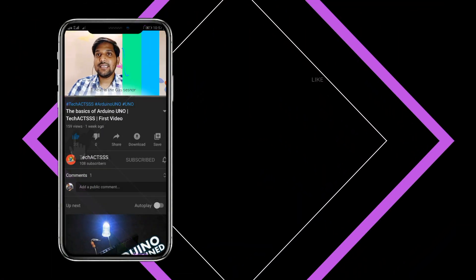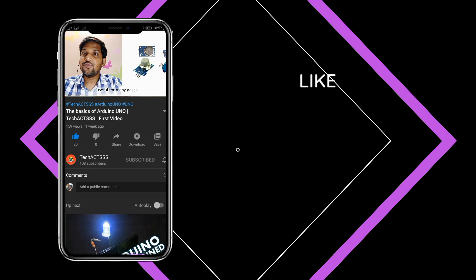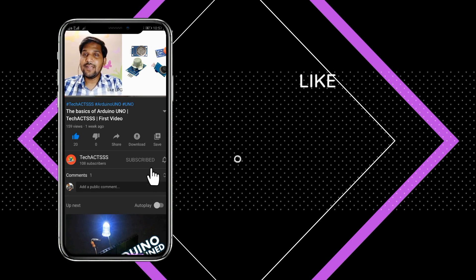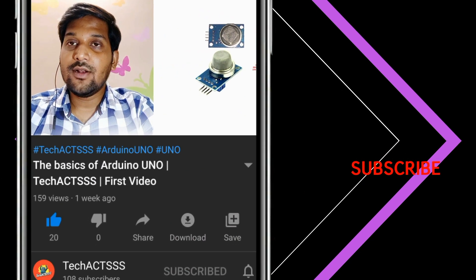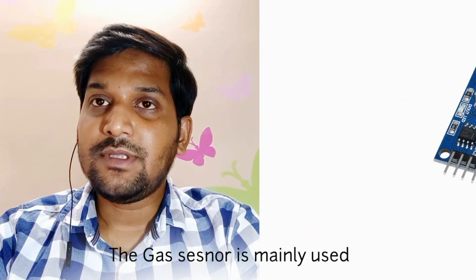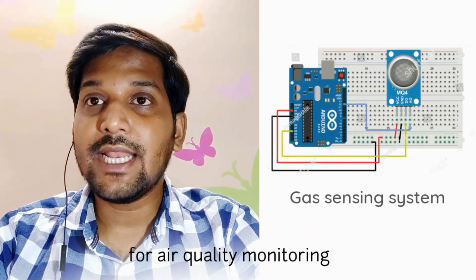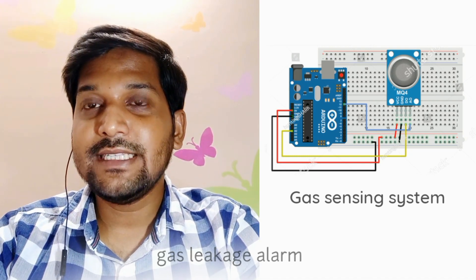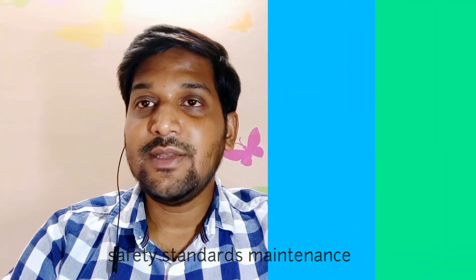Next is the gas sensor. Gas sensor module is useful for any gas leakage like LPG, alcohol, propane, hydrogen, CO, etc. The gas sensor mainly uses air quality monitoring, gas leakage alarm, safety and standards maintenance.